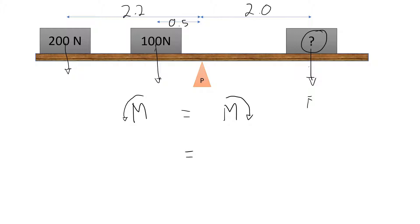So on the right-hand side here, we'll have the force times the distance. On this side, we'll have the force 1, which is 200 newtons, times 2.2.